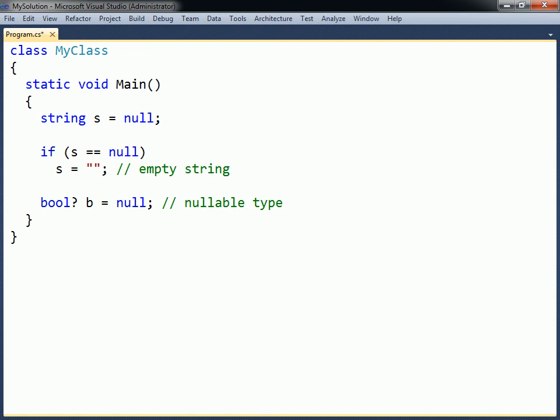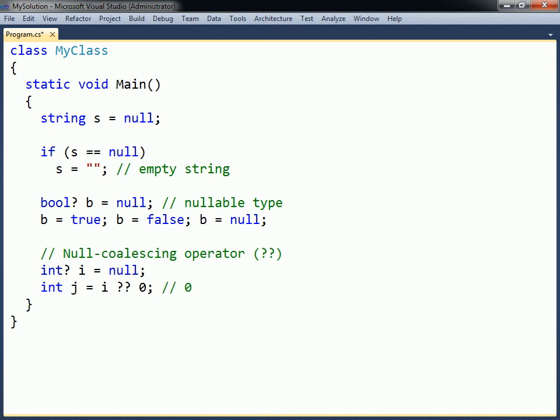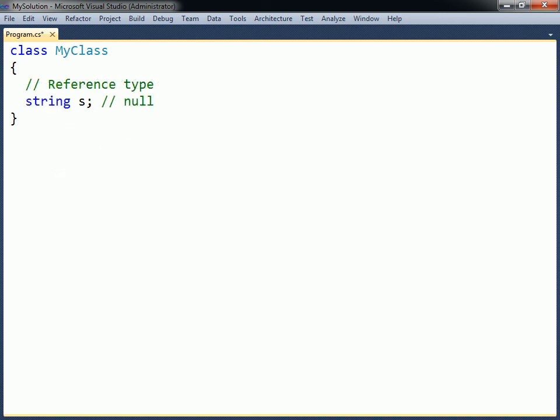This is called a nullable type, and allows the simple types, as well as other struct types, to indicate an undefined value. This nullable type for example can hold the values true, false and null. The null-coalescing operator returns the left-hand operand if it is not null, and otherwise returns the right-hand operand. This conditional operator provides an easy syntax for assigning a nullable type to a non-nullable type. A variable of a nullable type should not be explicitly cast to a non-nullable type, as doing so will cause a runtime error if the variable has null as its value. The default value of a reference type is null.